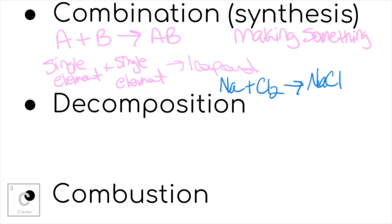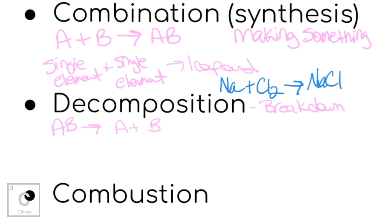Let's look at decomposition. Think about what the word means — it means to break something down. It's the exact opposite of combination. Combination, we're making something; decomposition, we're breaking something down. The general formula is exactly opposite: we have a big compound AB, and we break it down into smaller pieces — either single elements or smaller compounds.